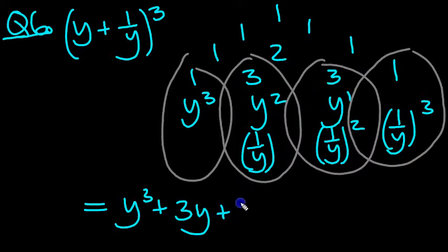And then we've got plus 3 again. There's a y squared underneath when you expand this and there's a y on top. So that will just leave a y underneath, won't it? And then the next term, the last term, is plus 1 lot of 1 over y cubed, which expands to 1 over y cubed.